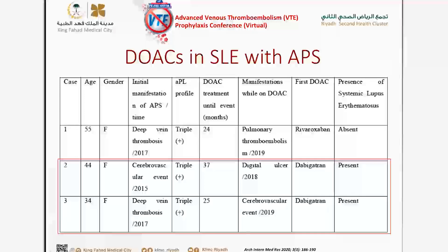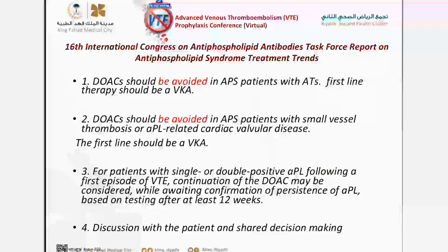That covers most studies about APS. What about SLE specifically? There are only a few scattered case reports about SLE patients given DOACs. One case series reported three patients — two of them with SLE — who developed thrombosis and were given dabigatran. After almost two years, all of them developed another thrombotic event. The first patient was given dabigatran for stroke and then developed digital ulcers; the second had DVT and then developed CVA. This again indicates failure of these agents in our patient group.